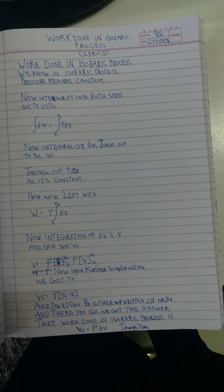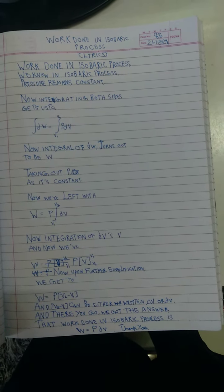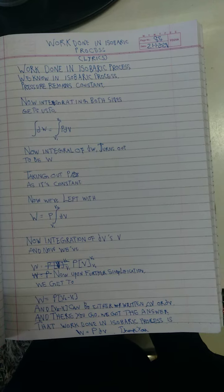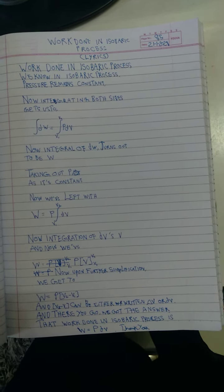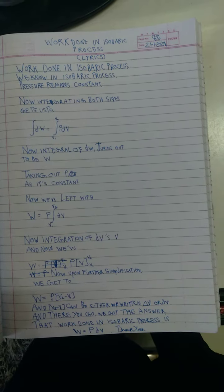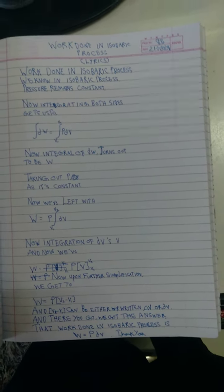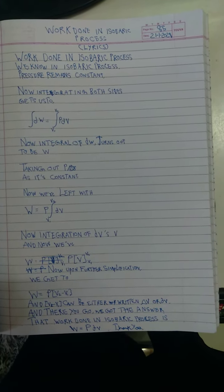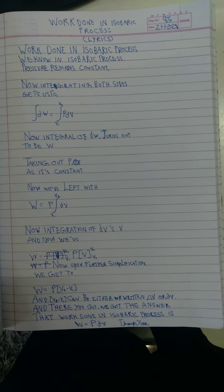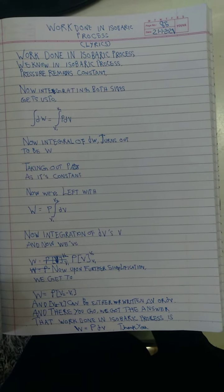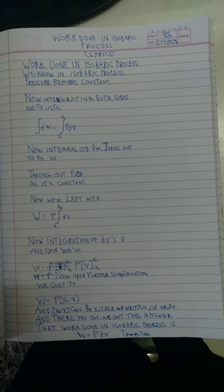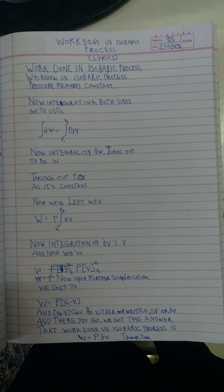Now upon further simplification we get to w equal p times v2 minus v1. And v2 minus v1 can be written as either dv or delta v, which further gives us w equal pdv or p delta v. That's work done in isobaric process. Thanks for watching.